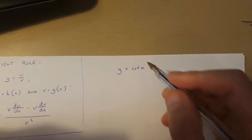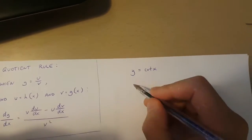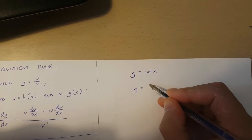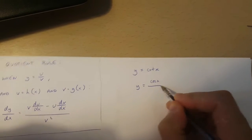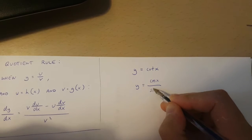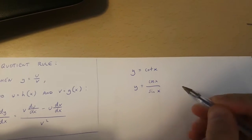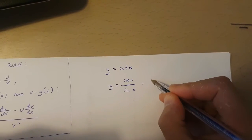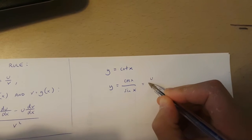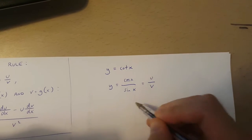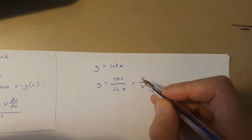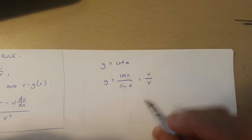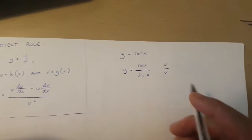Now y equals cot x is the same as y equals cos x over sin x. I'm going to make this equal to u over v, where u is a function of x and v is a function of x.